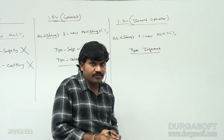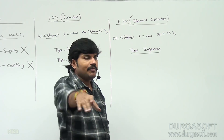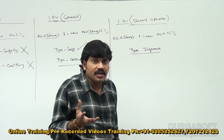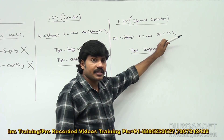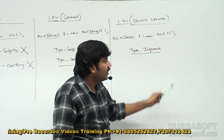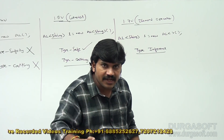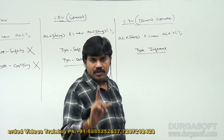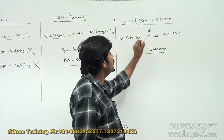The diamond operator — which came in Java 1.7 — means the type parameter second time is not required to be specified. The biggest advantage is readability will be improved, length of the code is going to be reduced, and we can write more concise code because we are not required to specify the type parameter a second time.